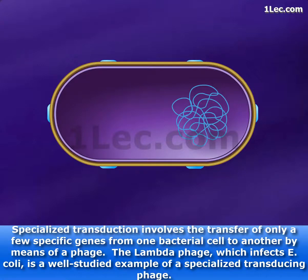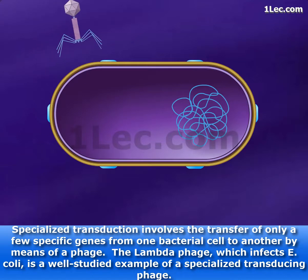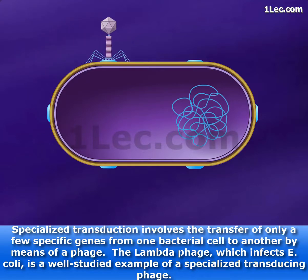Specialized transduction involves the transfer of only a few specific genes from one bacterial cell to another by means of a phage. The lambda phage, which infects E. coli, is a well-studied example of a specialized transducing phage.